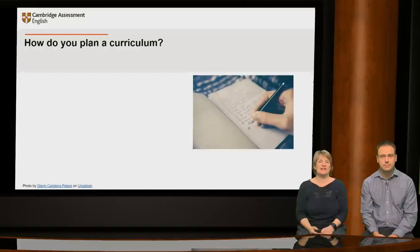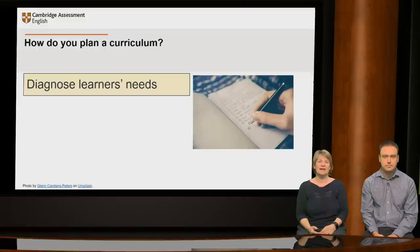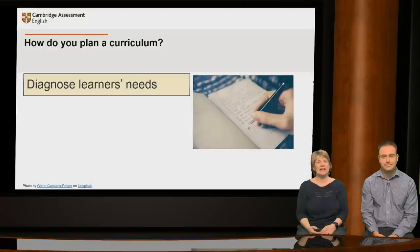Good practice for planning a curriculum tends to follow roughly this procedure. It begins with working out what learners need. To take some obvious examples, there's no point in planning to spend a lot of time on writing if your learners need English to talk on the phone. There's no point in focusing on advanced grammar if your learners are only at a basic level. And there may be no point in teaching particular vocabulary if your learners have no personal experience or need of it. In other words, you need to consider your learners' context.